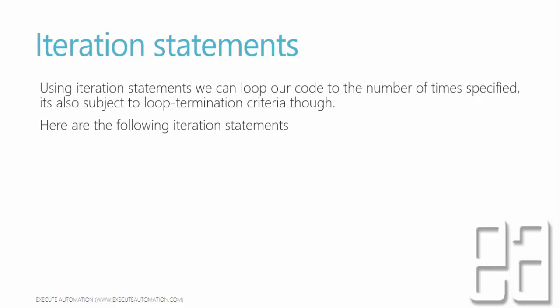Here are the iteration statement keywords available: the do statement, for statement, foreach and in statements, and while statement. These are the different kinds of looping statements available in C#. We will focus on for, foreach, and while loops rather than do loop, because do loop performs an operation before actually looping — it's a bit different. The most useful loops in the automation testing world of C# are for, foreach, and while.